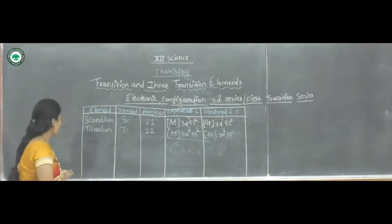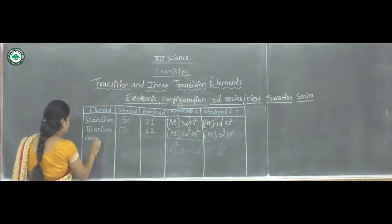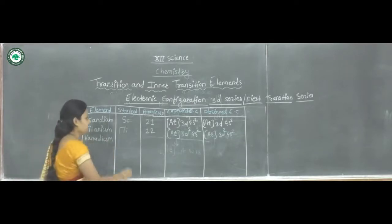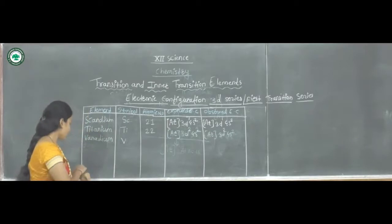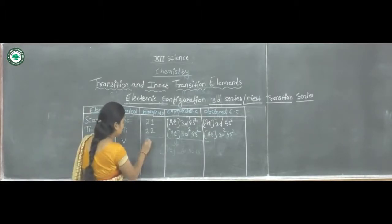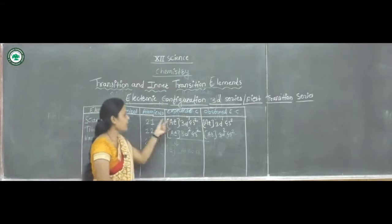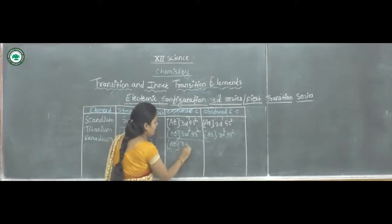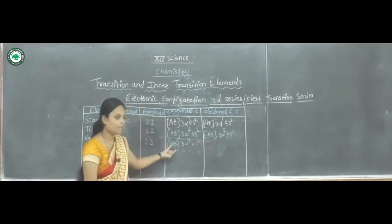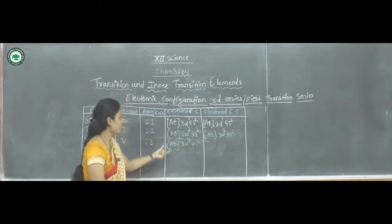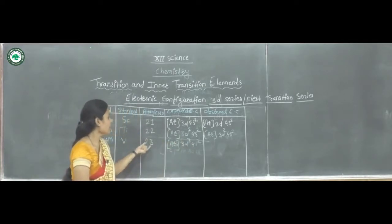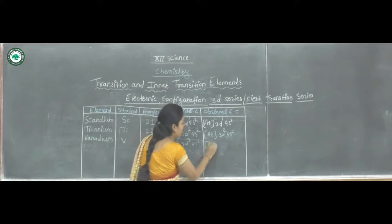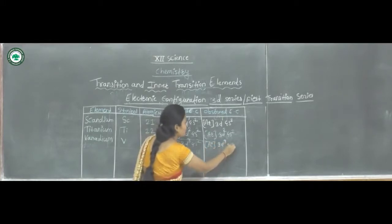The next element is Vanadium, symbol V, atomic number 23. The expected electronic configuration is [Ar] 3d³ 4s² — 18 electrons plus 5 gives 23. The observed electronic configuration is the same: [Ar] 3d³ 4s².